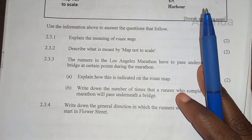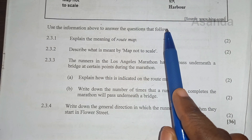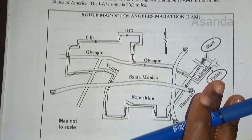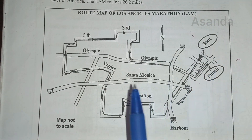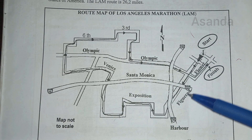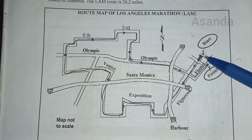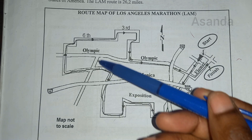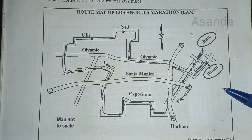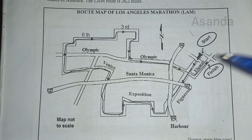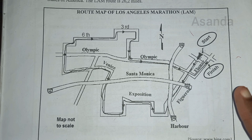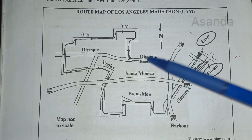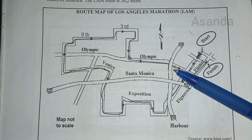Question 2.3.1: Use the information above to explain the meaning of the route map. In this context, a route map is a map that shows the path that the people running the marathon will take from start to finish. That would be the answer — keeping it in context, it shows the actual path the marathon runners will take from start to finish.